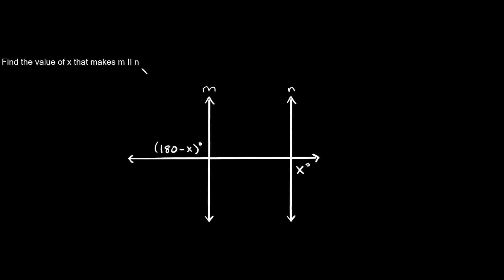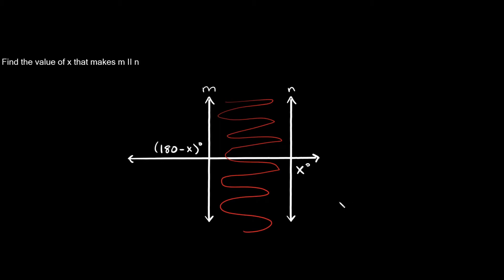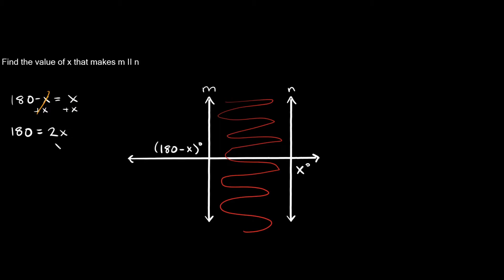Here's the next one — find the value of x that makes m parallel to n. These are our parallel lines, so everything in between is the interior. That means these two angles out here are on the exterior, and they're on opposite sides of this transversal line — so these are alternate exterior angles, and alternate exterior angles are congruent. So we can say 180 minus x equals x. Adding x to both sides gives us 180 equals 2x. Dividing both sides by 2 gives us x equals 90.